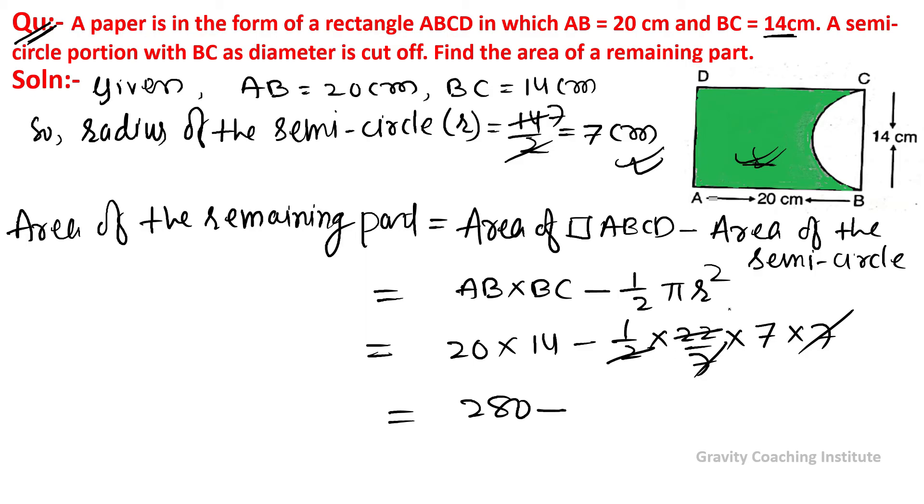280 minus 77 equals 203 centimeter square, which is our required answer.